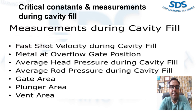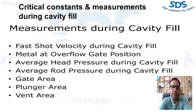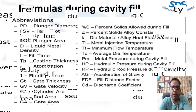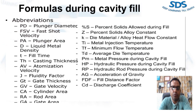The fourth variable is average rod pressure during cavity fill, also important for the discharge coefficient calculation and preventive maintenance. The gate area is the sum of the area of all in-gates in the die casting mold and should be measured often to assure accuracy. In a large cold chamber machine using aluminum, gate area may need to be measured at every setup. In a small hot chamber machine using zinc, gate area should be measured every six months to one year. The fifth variable is plunger area, equal to plunger diameter squared multiplied by pi divided by four. Vent area is the sum of all vent areas in the die casting mold, measured at the smallest point.